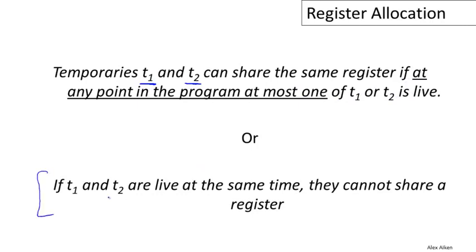This is the negative form of the statement. It just tells you that if you need two values at the same moment in time, they cannot share a register.